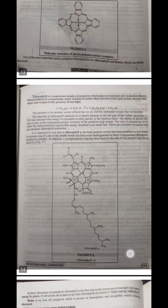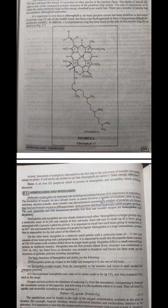There are a number of similar but not identical chlorophyll molecules. It is important to note that in chlorophyll, the basic porphyrin system has been modified in two ways. In pyrrole ring 4, one of the double bonds has been hydrogenated to form a magnesium dihydroporphyrin complex. In addition, a cyclopentanone ring has been fused to the side of pyrrole ring 3 as shown in figure 5.3.